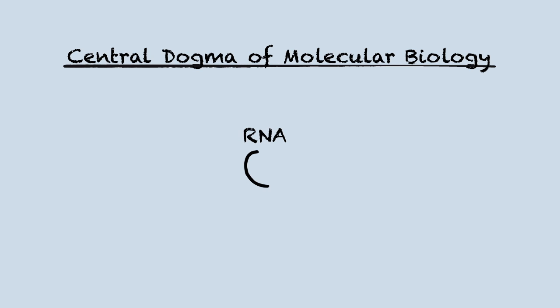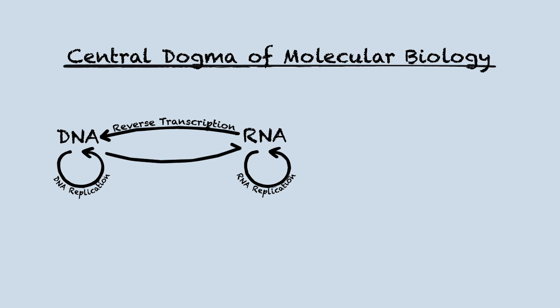The central dogma says that RNA can be replicated to make new RNA. RNA can be reverse transcribed to make DNA. DNA can be replicated to make new DNA. DNA can be transcribed to make RNA. And RNA can be translated to make protein.